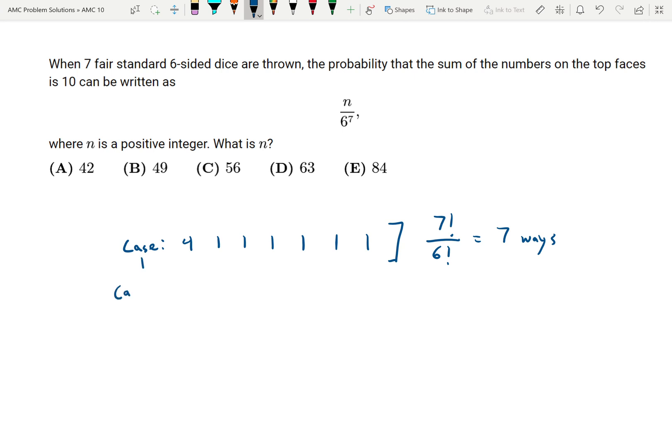Case 2 is if one of my rolls is a 3, one is a 2, and then the others are 1s. And the number of ways this can happen is 7 factorial over 5 factorial, which is 7 times 6, 42 ways this can happen.